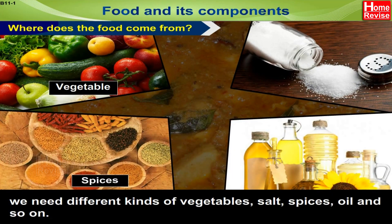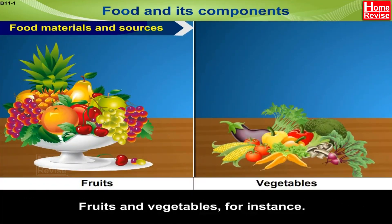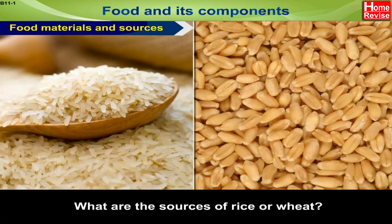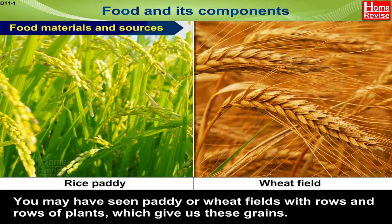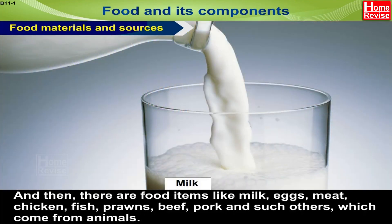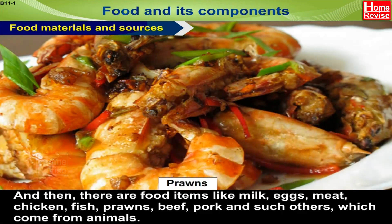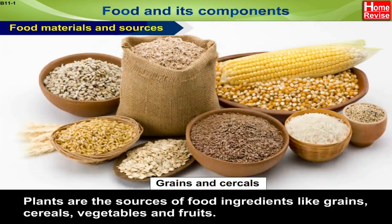Food materials and their sources — it may be easy for us to guess the sources of some ingredients. Fruits and vegetables, for instance — where do they come from? Plants, of course! What are the sources of rice or wheat? You may have seen paddy or wheat fields with rows and rows of plants which give us these grains. There are also food items like milk, eggs, meat, chicken, fish, prawns, beef, and pork, which all come from animals.